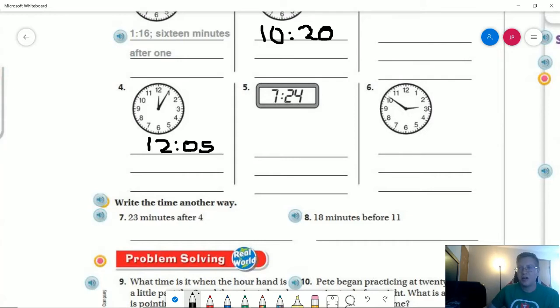Number six, our hour hand is between the two and the three, which means it is going to be two something. And our minute hand looks like it is five, six, seven, eight, nine minutes before the hour. So we could do our 60 minus 9 to get 51.